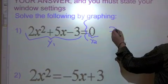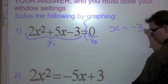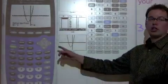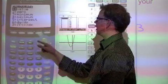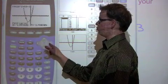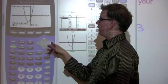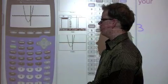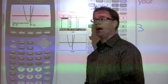We will write that on our page. X is equal to negative three. However now, you'll also see there is another answer. Second, calc, intersect. So move your cursor over to the other answer. Enter three times. And the answer is 0.5.